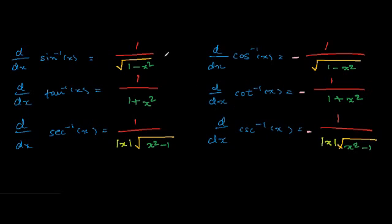Notice that the function on the left and the function on the right are exactly the same except for the sign difference — there is a positive sign on the left and a negative sign on the right. This is one way to remember how to derive the derivatives of inverse trig functions.